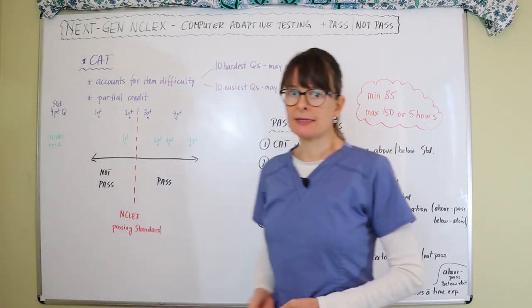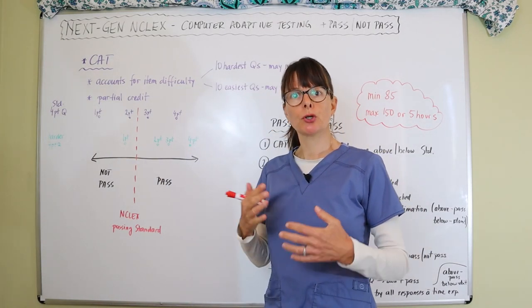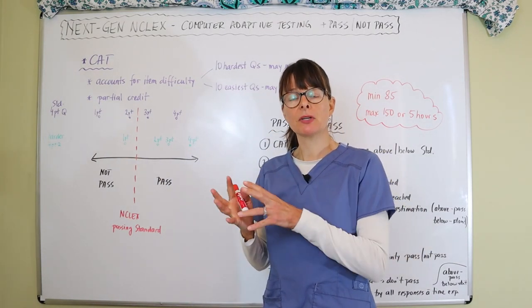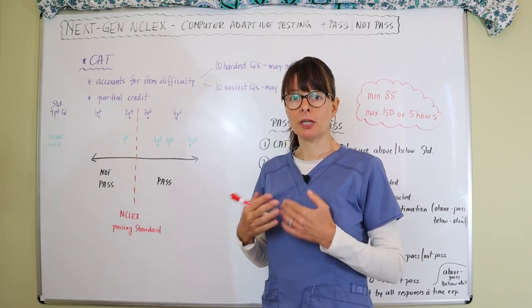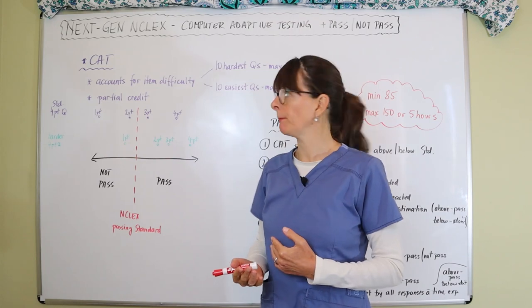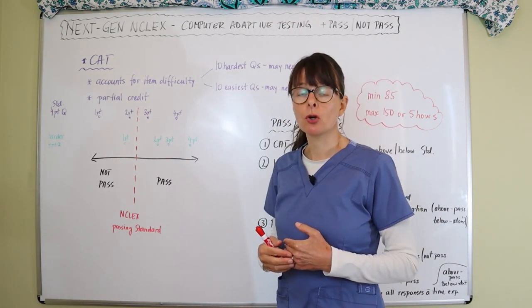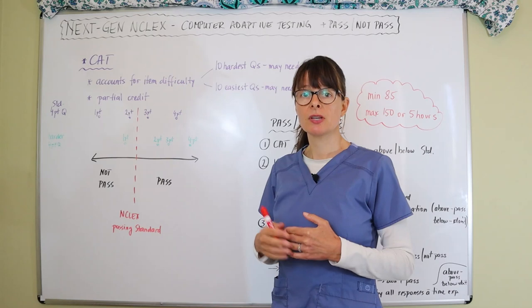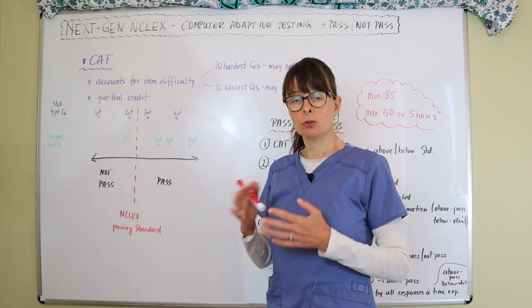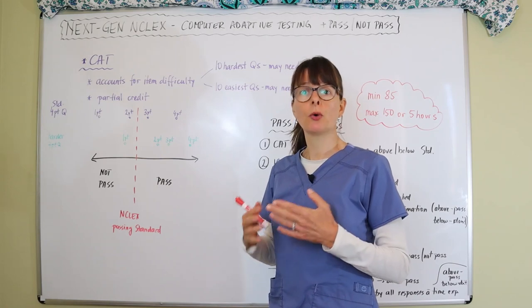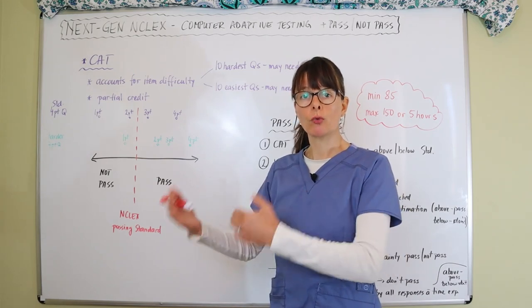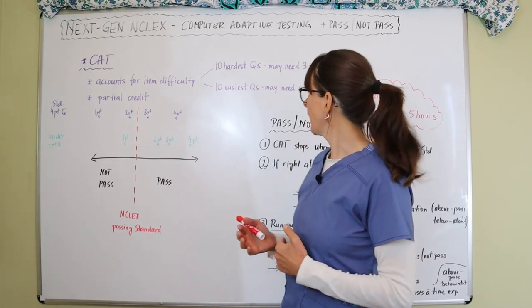Computer Adaptive Testing means the computer knows the item difficulty and takes that into consideration. You also get partial credit for incomplete answers, so those select all that apply questions might give you partial credit even if you don't have all the correct answers on that item.